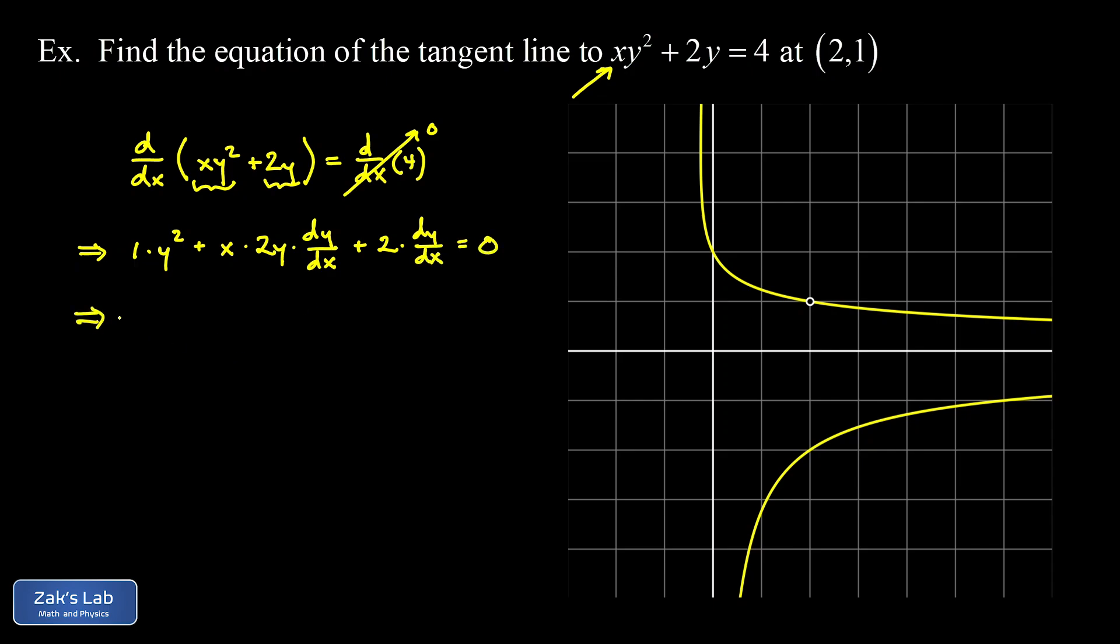Now the point here is to isolate dy/dx because the geometric interpretation of that is that it's the slope of this curve. So what I'm going to do is take these two terms that contain dy/dx and factor the dy/dx out. So I end up with dy/dx times (2xy + 2).